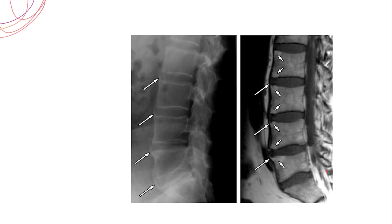Ankylosing spondylitis is an ascending inflammation, so after the sacroiliac joint, the vertebrae are very likely to be affected. To diagnose vertebral involvement, at least three intervertebral discs must be involved — meaning at least four vertebrae. One of the earliest vertebral findings is a shiny or sclerosed appearance at the characteristic marginal edges, called the shiny corner sign.